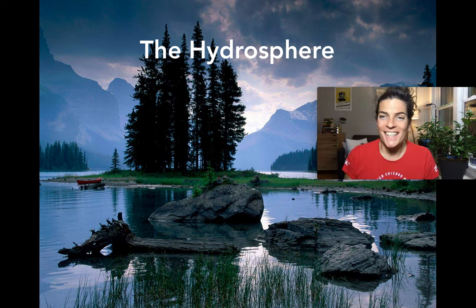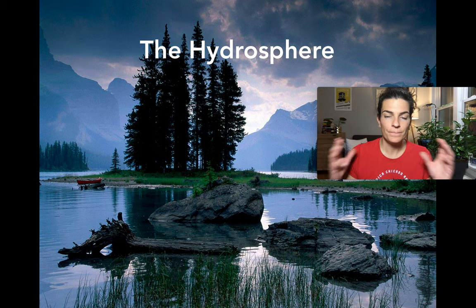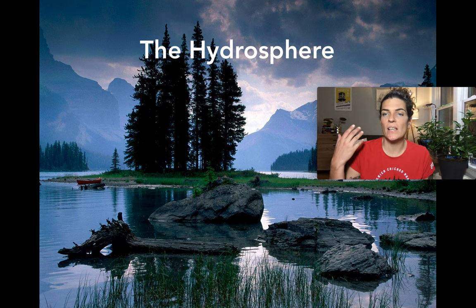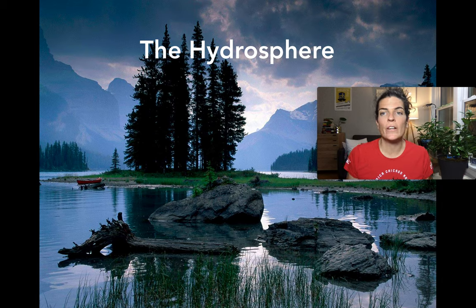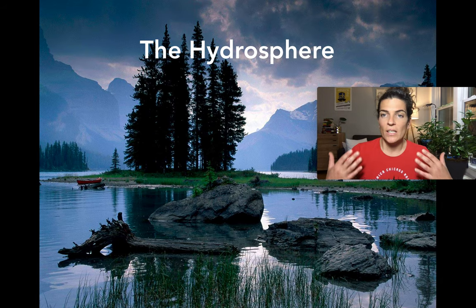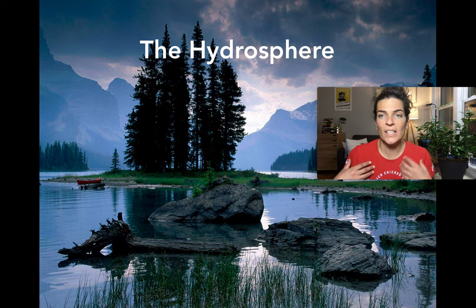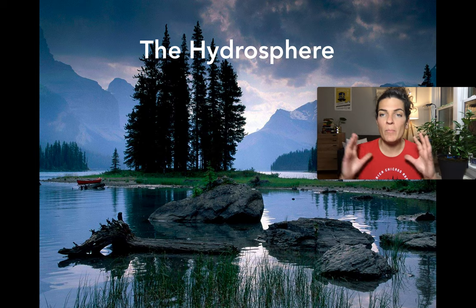As the name suggests, the hydrosphere is everything on Earth that's water — liquid water, ice water, and water vapor. Liquid water we can see on the Earth's surface or falling from clouds as rain. Ice water appears as snow, glaciers, icebergs, and ice caps. Water vapor is invisible but we feel it when it's humid. These components make up the hydrosphere.